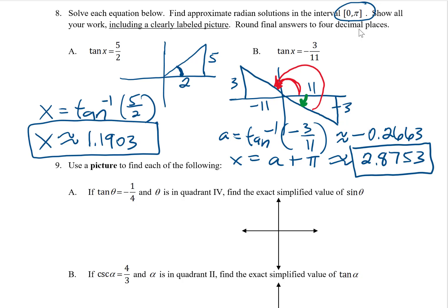If the original interval had been between negative pi over 2 and pi over 2, then negative 0.2663 would have been the answer. But I was looking for 0 to pi, so I had to make that adjustment.